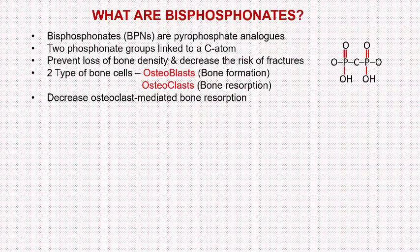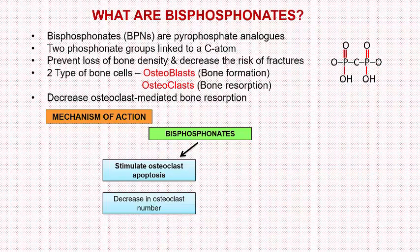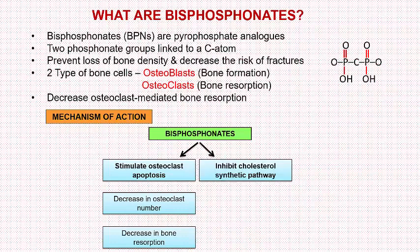Bisphosphonates decrease osteoclast-mediated bone resorption by stimulating osteoclast apoptosis, resulting in a decrease in osteoclast number, and finally resulting in decreased bone resorption. Another mechanism is that they inhibit the cholesterol synthetic pathway, thereby resulting in decreased osteoclast function and decreased bone resorption.